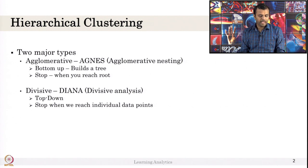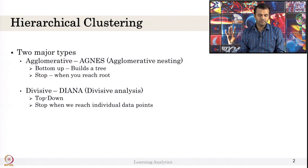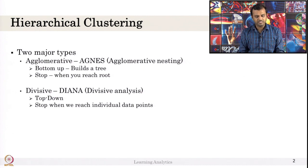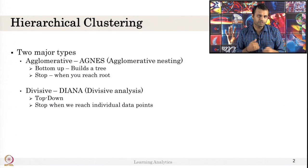For AGNES, we build a tree from the bottom up. We will see what a tree is and what bottom-up means, and we will stop when we reach the root. For DIANA, it is just the opposite — we start from the top and reach all the individual data points. We will see the difference between AGNES and DIANA.